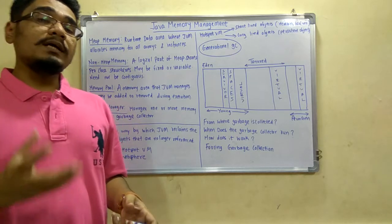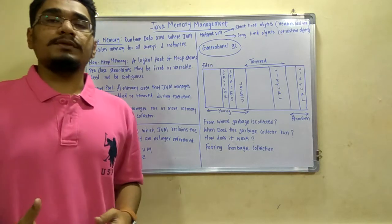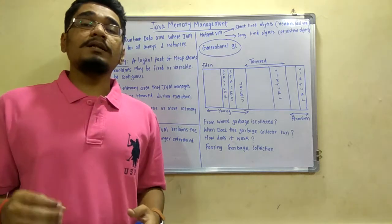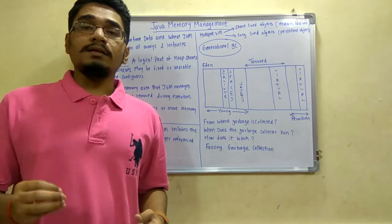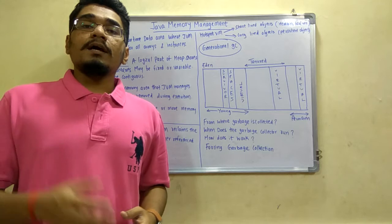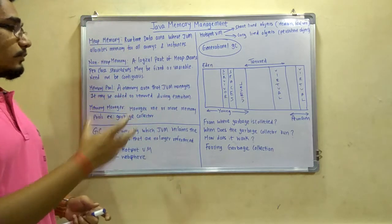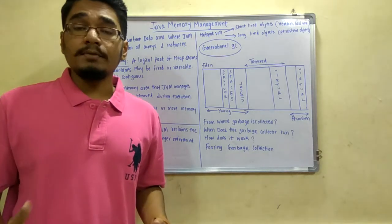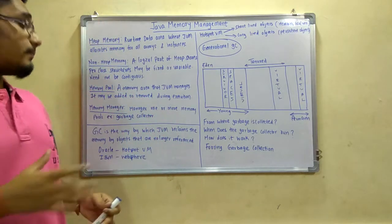Next, what is a memory pool? A memory pool is an area that the JVM manages internally during program execution. It may be added or removed during program execution. In JVM internals we have seen five memory pools: the Java stacks, native method stacks, heap memory, and program counter registers. These are the memory pools required for program execution, and they may be added or removed at any time by the JVM.